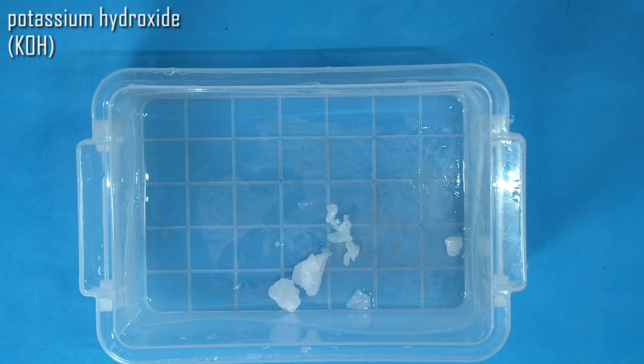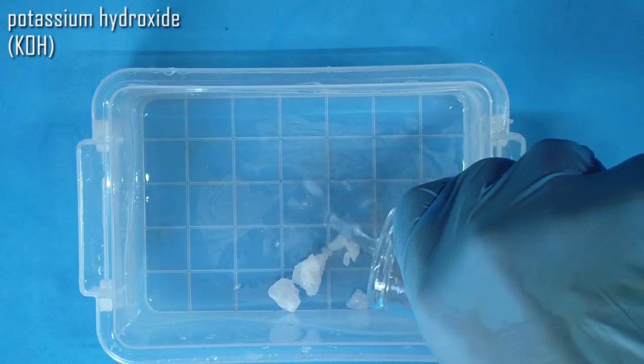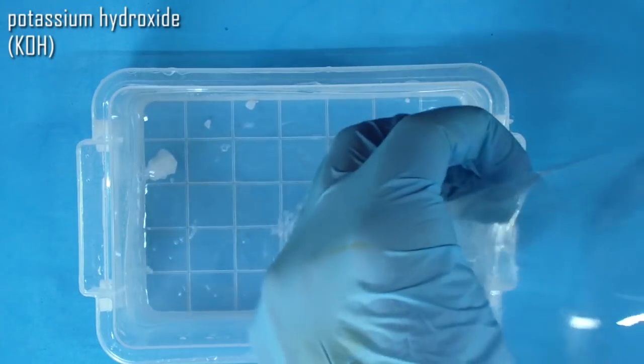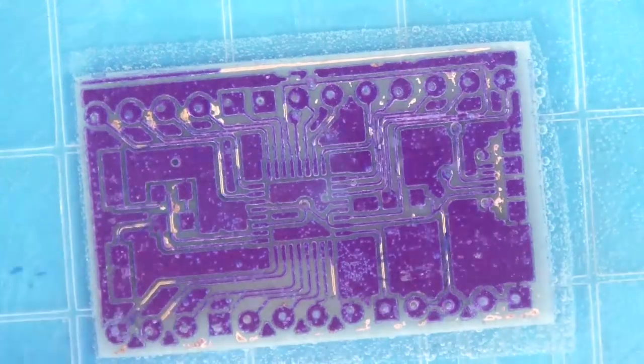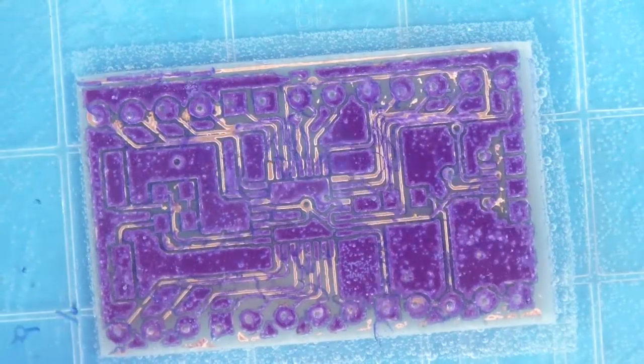After etching, use small amount of potassium hydroxide, mix it with water to remove the film from the PCB. Okay, our PCB is etched and the traces are clear. Let's give it a good finishing.